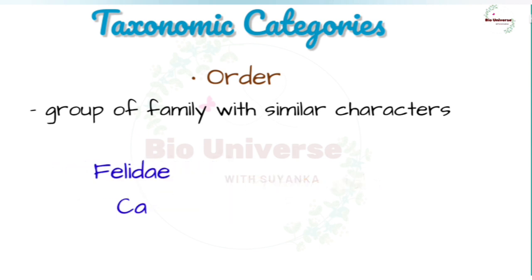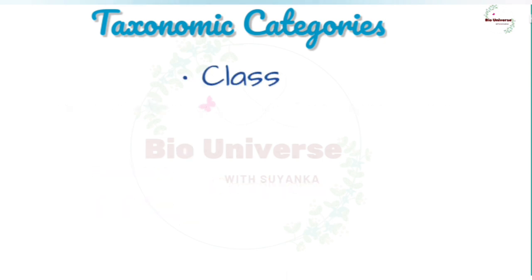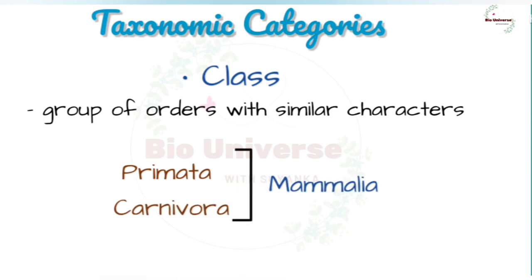The animal order Carnivora includes families like Felidae and Canidae. Class is a major category made of one or more related orders that possesses certain similar characters. For example, order Primata — comprising monkey, gorilla, and gibbon — is placed in class Mammalia along with order Carnivora, which includes animals like tiger, cat, and dog. Class Mammalia has other orders also.